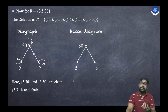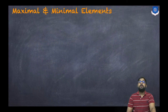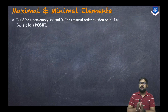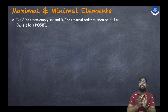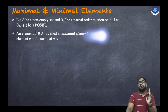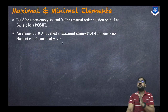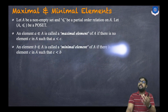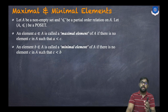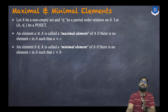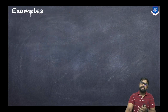Now let us discuss what a maximal and minimal element is. Let A be a non-empty set and ≤ a partial order relation on A. An element a ∈ A is called a maximal element of A if there is no other element c in A such that a < c. Similarly, an element b ∈ A is called a minimal element if there is no element c in A such that c < b.